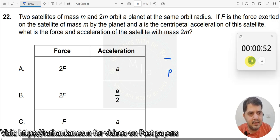So this is the planet and these are the two satellites of mass M and 2M. This is mass M here. There is another mass 2M over here.